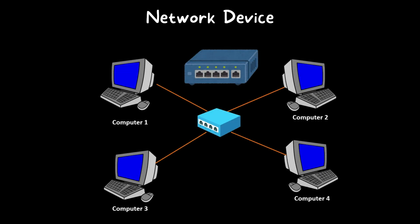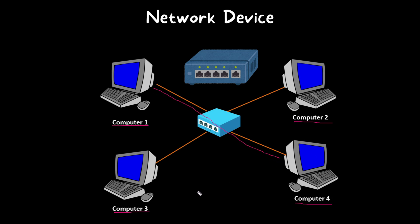A network device helps multiple devices connect to it and establishes connectivity between them. Here we have computer 1, computer 2, computer 3, and computer 4, all connected to a networking device which can be a hub or a network switch. Its function is to provide network connectivity between the devices. For example, if computer 1 wants to send information to computer 4, they can communicate easily. Computer 2 can communicate with all other computers without any issue. The main function of a network device is to establish network connectivity between all connected devices.